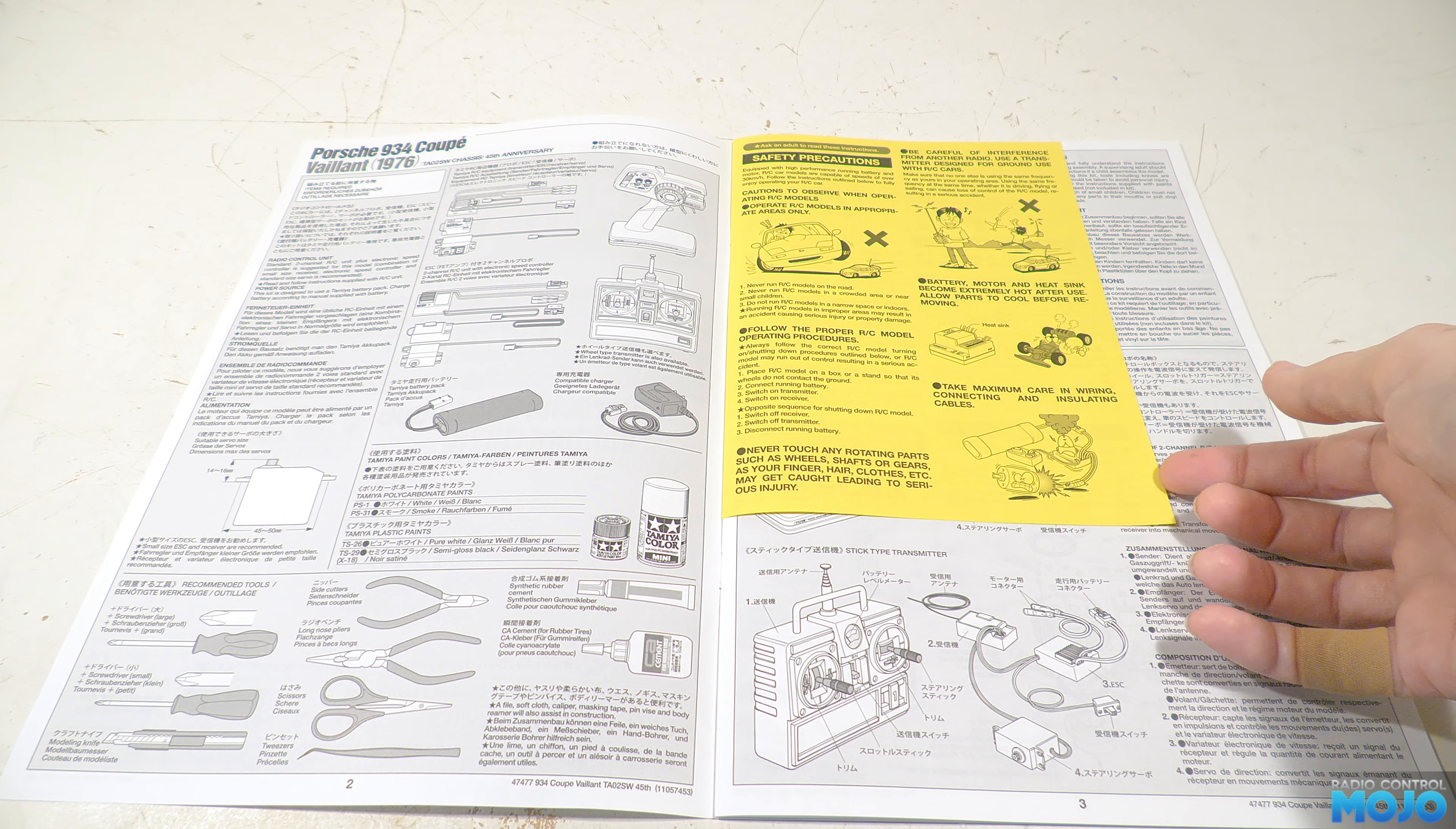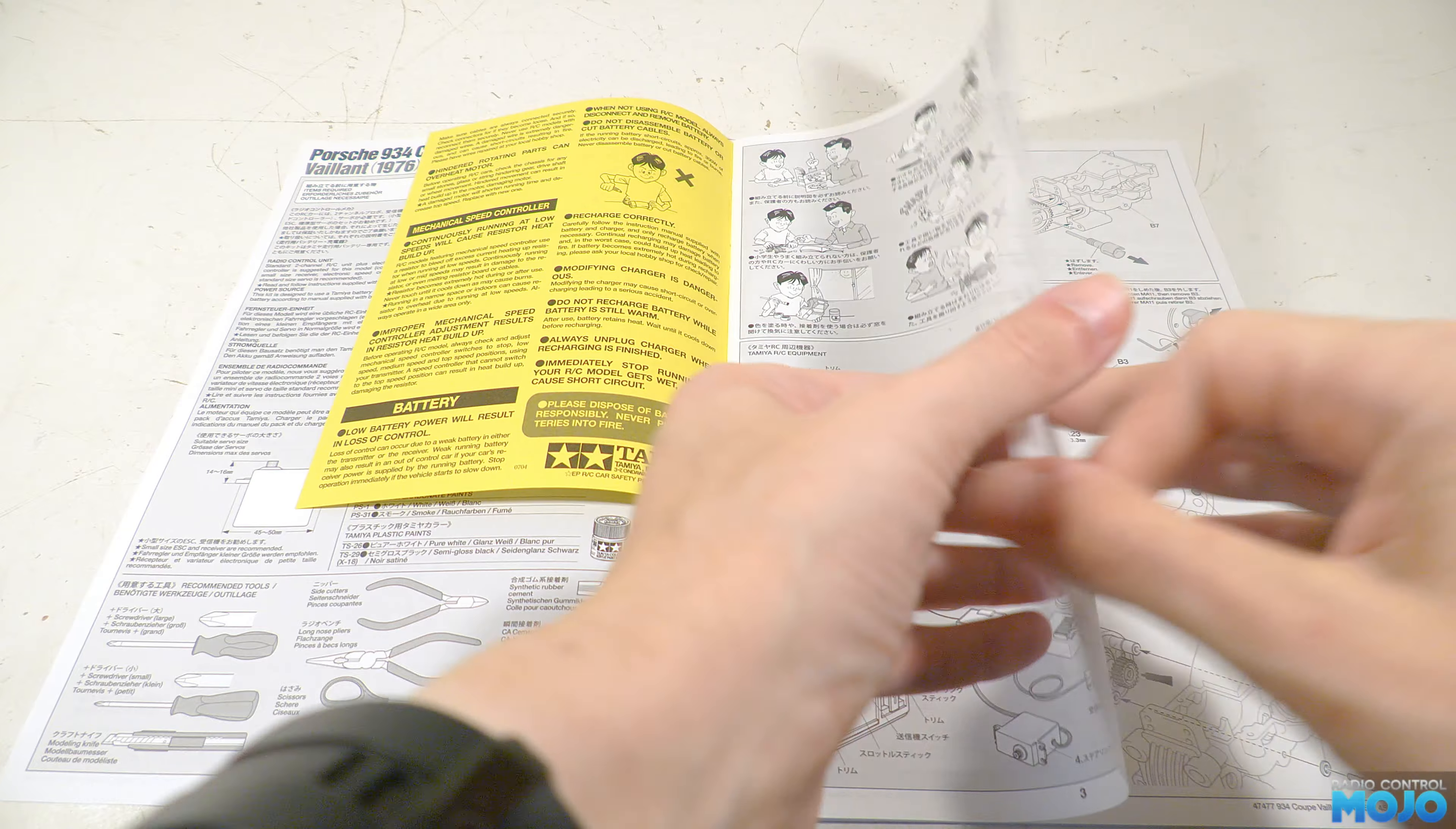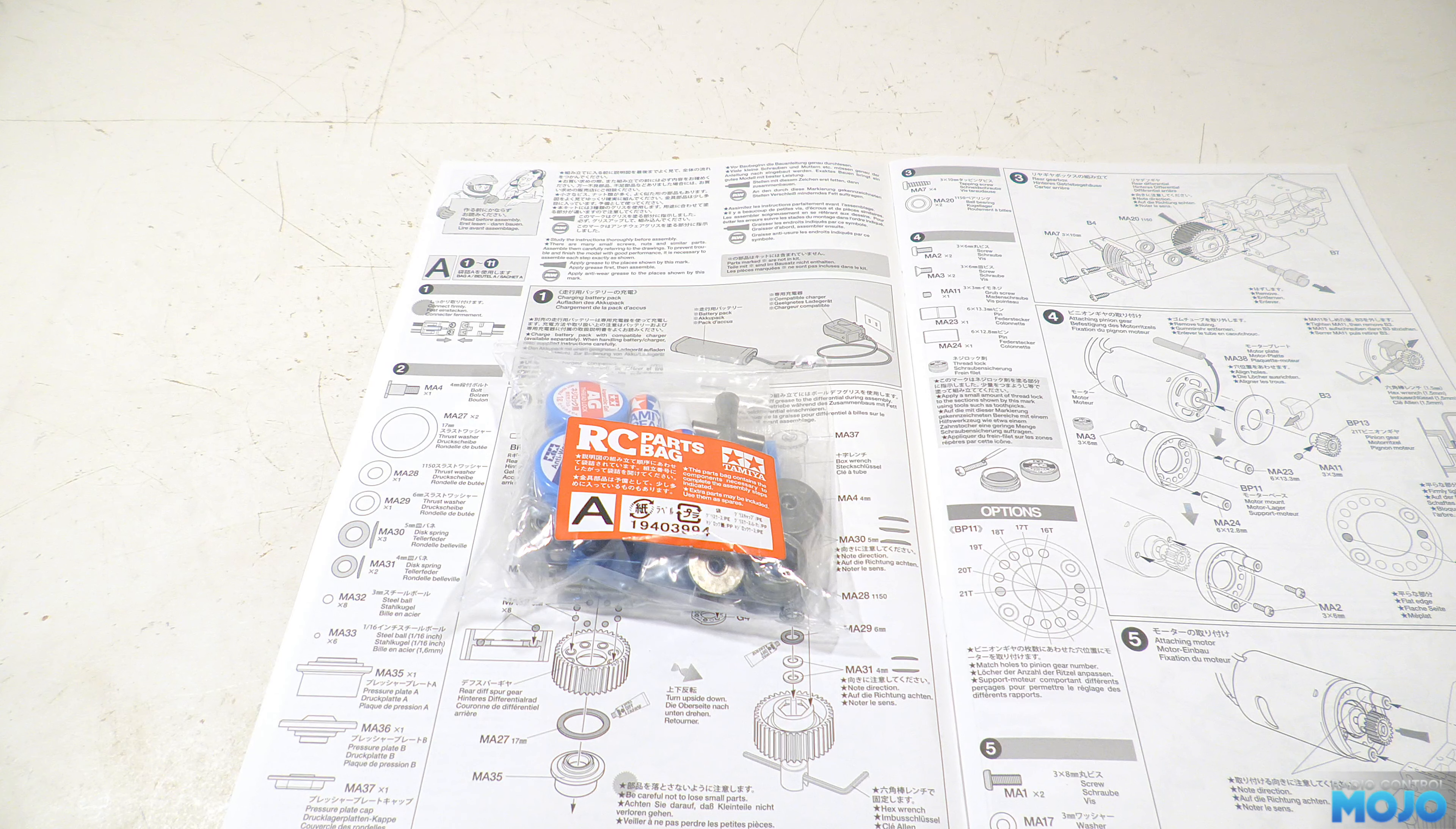On the second page we have the neat warning cartoons and a couple of hookup guides for the electronics. And now for the main event, the start of the build. Thankfully this kit is divided into sections that match the metal parts bags, so for the first section we only need bag A. Some Tamiya kits you end up with all the bags open, which does get a bit messy.